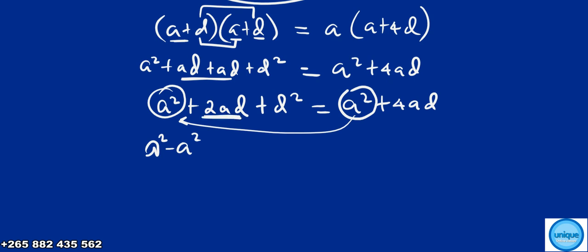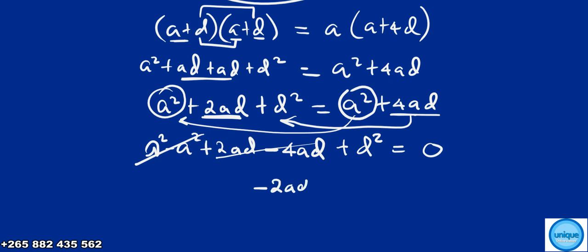Combining like terms: a squared plus 2ad plus d squared equals a squared plus 4ad. The a squared cancels out. We have 2ad minus 4ad, which equals negative 2ad, plus d squared equals zero.